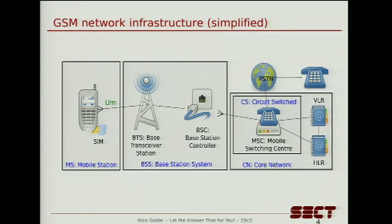Let's look at the GSM architecture and the components that are important for this. Starting on the left, there's the device you all know — the mobile phone, which is talking to the base station over the air. The base station is just the radio tower that transfers signal from your phone to the network and vice versa. It's connected to the base station controller, which manages several BTSs at once. It talks to the mobile switching center, which takes care of establishing calls, switching a call from one location to another, and initiating signaling to the phone. It's also usually connected to the PSTN — the public switched telephony network, which is the normal landline phone.